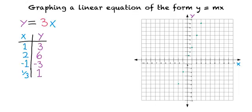This line, if we connect all these dots, represents the set of all possible solutions to the equation y equals 3x. Any x-y combination on this line could be plugged into this equation and it would be true. Since these solutions form a straight line, we call this a linear equation.